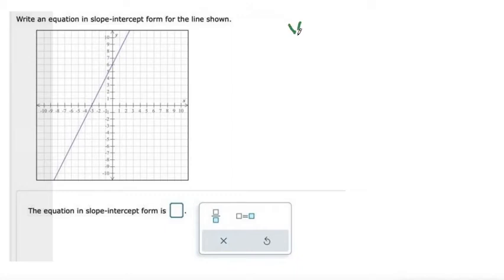Slope-intercept form is y equals mx plus b, where m is the slope of the line and b is the y-intercept.